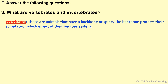Vertebrates: these are animals that have a backbone or spine. The backbone protects their spinal cord, which is part of their nervous system. Examples include mammals, birds, reptiles, etc.